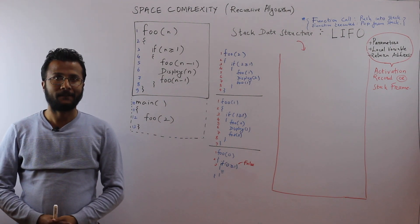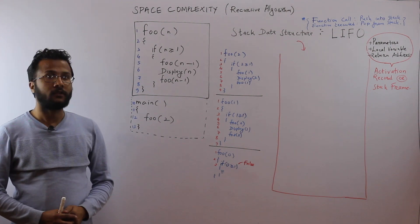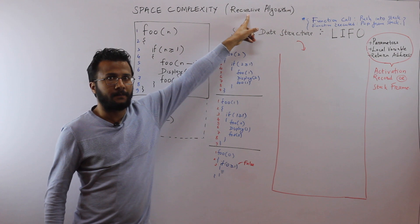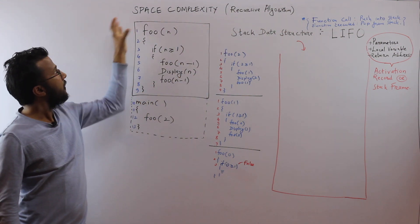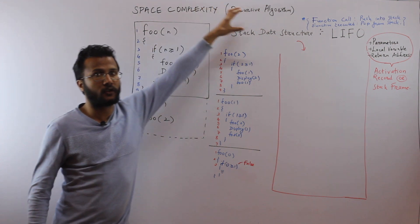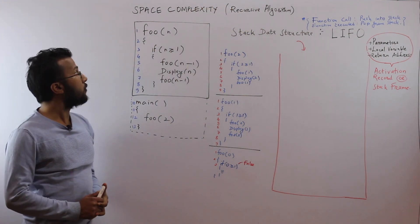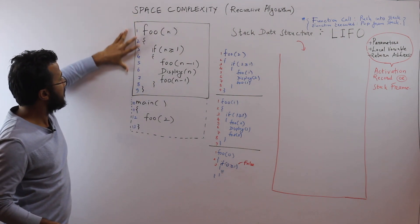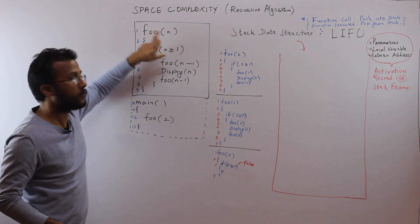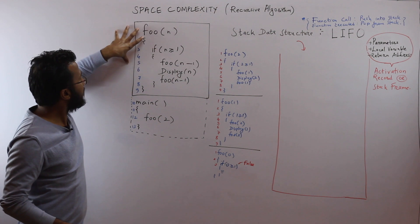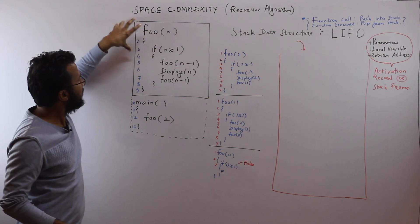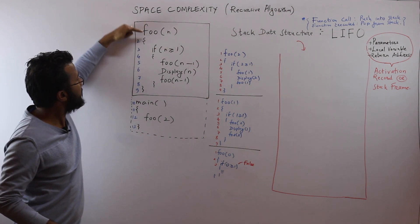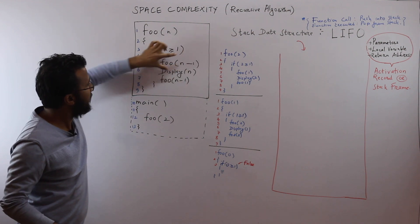Hello friends, welcome back. In this video we are going to see how to calculate the space complexity for a recursive algorithm. Before starting with the steps, let us briefly understand how recursion works. I have taken this example — a recursive function named foo that takes one argument n. This function is recursive because it calls itself; in the definition of foo, it calls foo(n-1) two times.